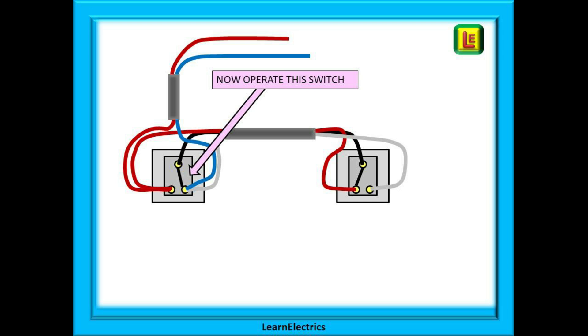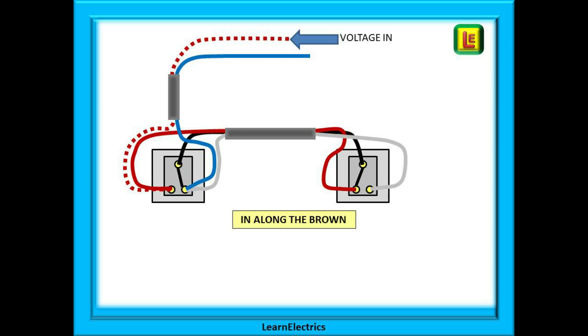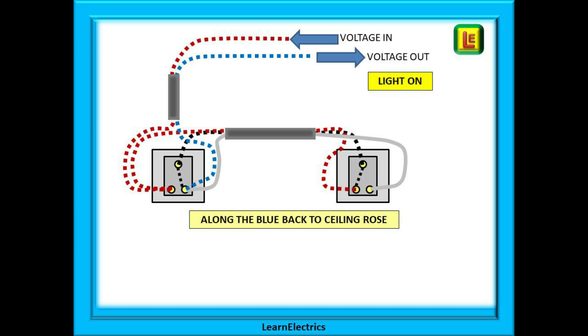Now we can operate switch number 1. And what happens this time? Voltage in along the brown switch wire to L1, along the brown wire of the strapper cable this time to L1 of switch number 2. Through the switch to the common terminal and along the black wire to terminal L2 of the first switch. Up the blue of the switch wire to the ceiling rose. Voltage in, voltage out, the light will come on.